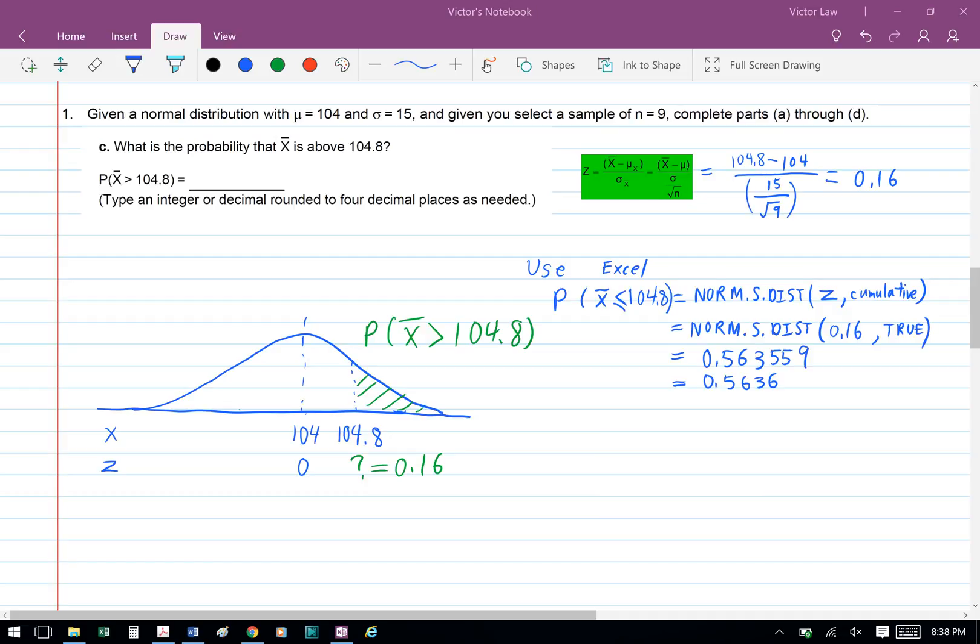We're going to substitute z for 0.16, and for cumulative, we're going to put true. We'll get a probability of 0.563559, which is 0.5636. This is the area to the left of 104.8.